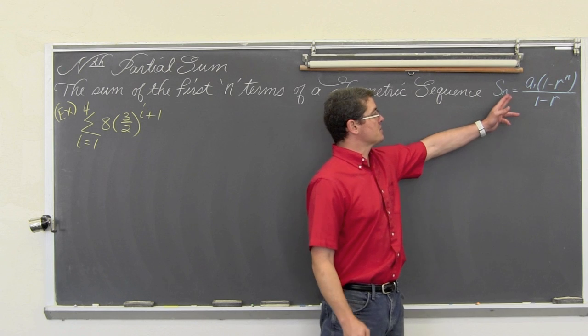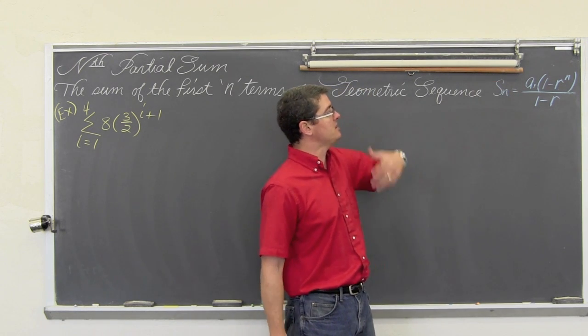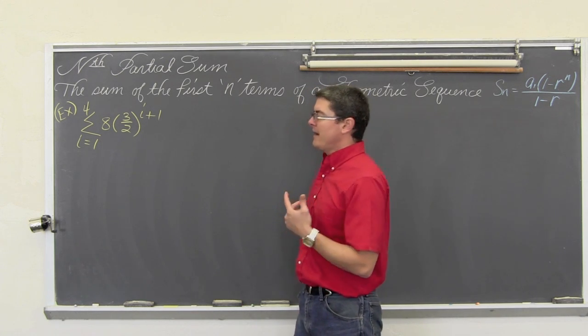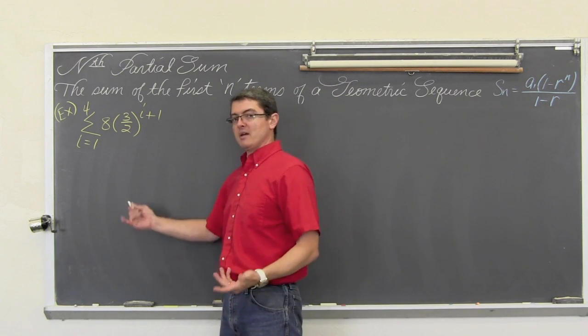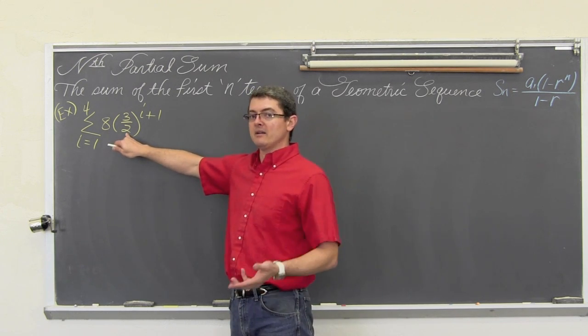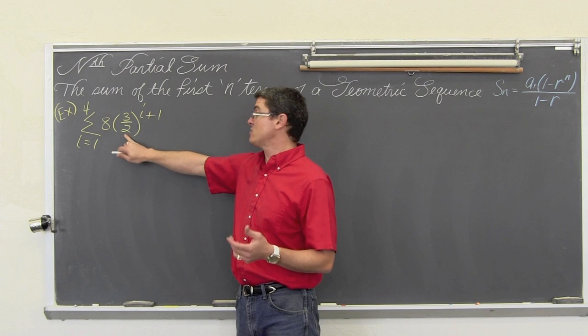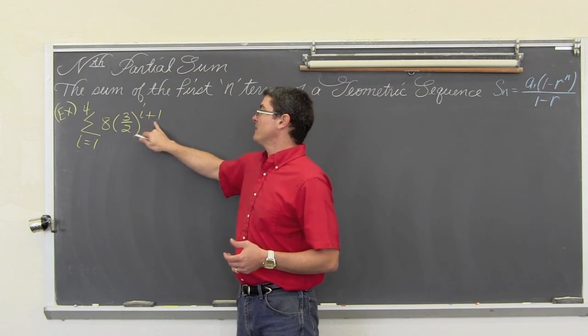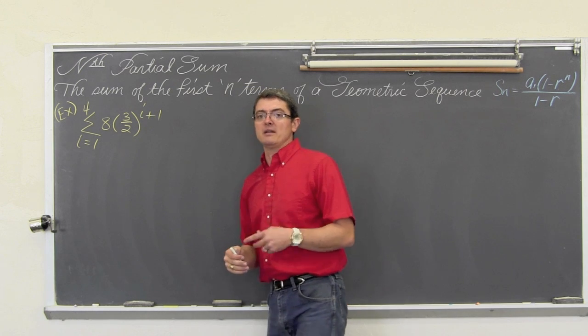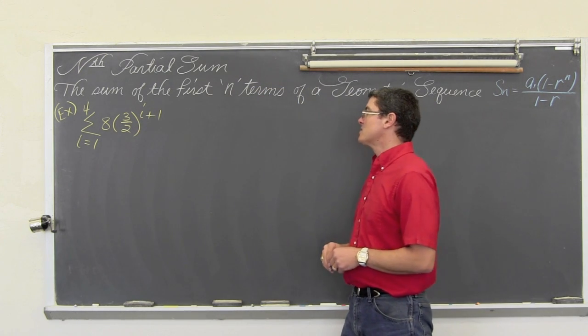The formula for a partial sum of a geometric sequence is S sub n equals a sub 1 times 1 minus r to the n over 1 minus r. How do I know that this is geometric? Because I have an initial amount, and I am constantly multiplying repetitively by the value of 3 halves, and I know I am doing constant multiplication because I have this variable in the exponent showing me that is the repetition that I am doing. Exponents show repetitive multiplication.